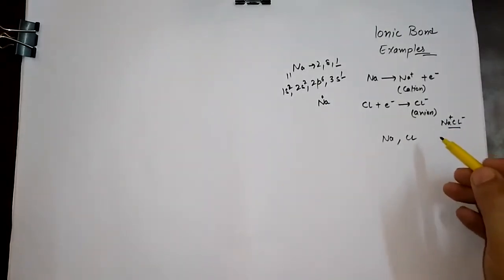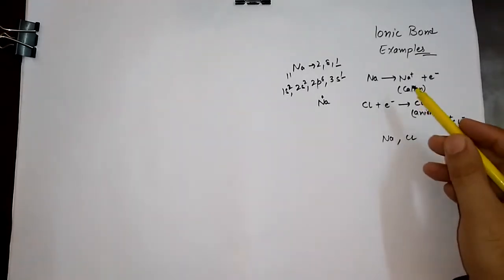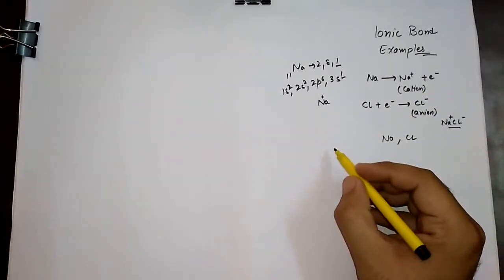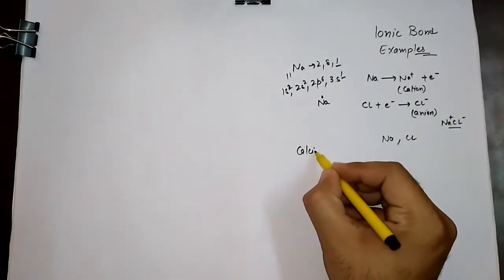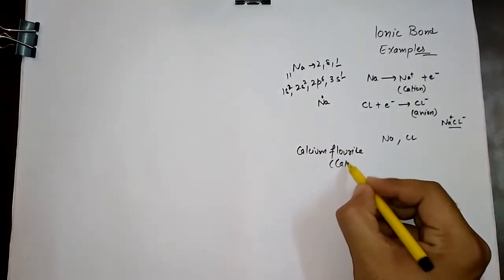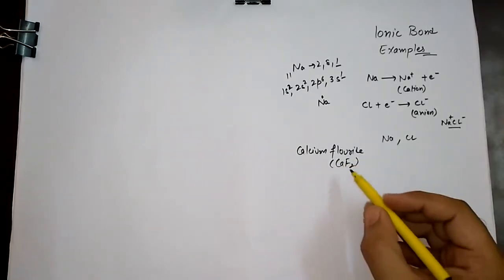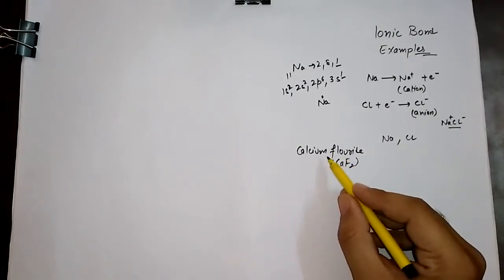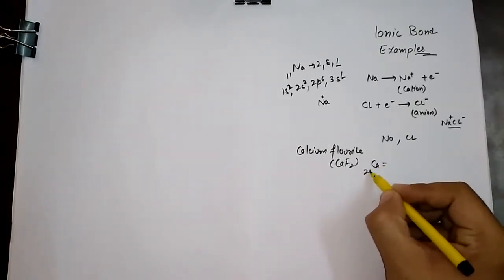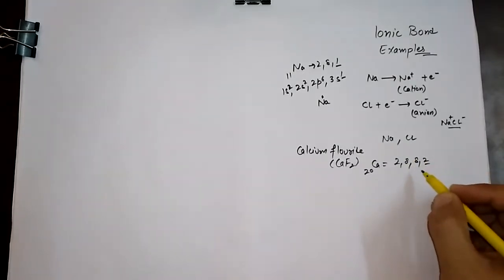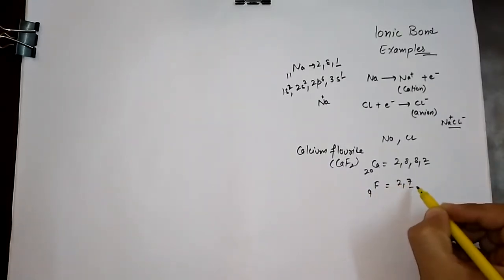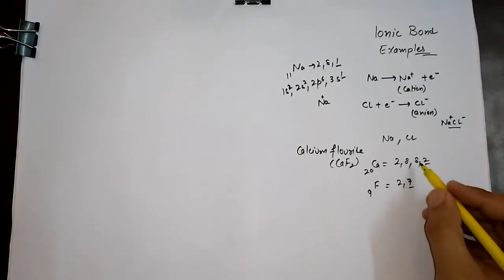When there is a formation of a bond, there will always be a cationic part and an anionic part. For example, in the formation of calcium fluoride, written as CaF₂, the bond formed between these two different atoms is an ionic bond. Calcium has atomic number 20 with two valence electrons, while fluorine has seven valence electrons.